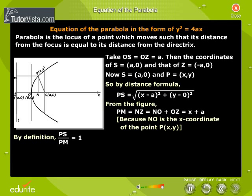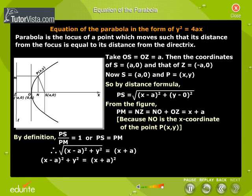By definition, PS/PM = 1 or PS = PM. Therefore, √[(x - a)² + y²] = x + a. Squaring both sides,